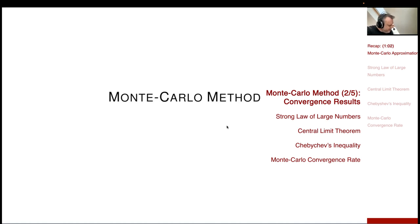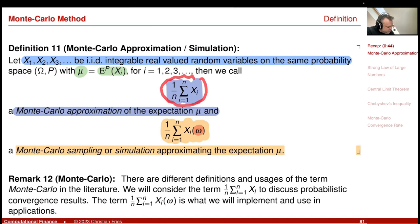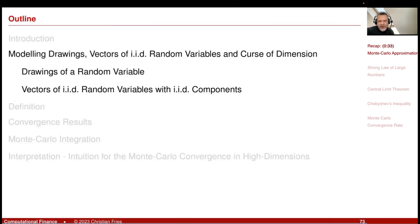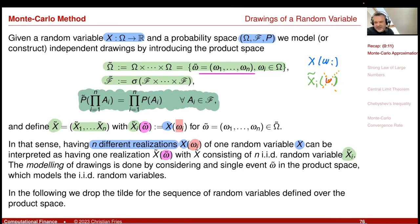Going back to our definition, I will consider a sequence of IID random variables, and in which sense this object converges to the expectation. The sequence of IID random variables is modeling the drawing of a random variable, and this sequence is modeled by a product space. If you plug in a single event into this sequence, it can be interpreted as X of omega_i — independent drawings of the omega_i.